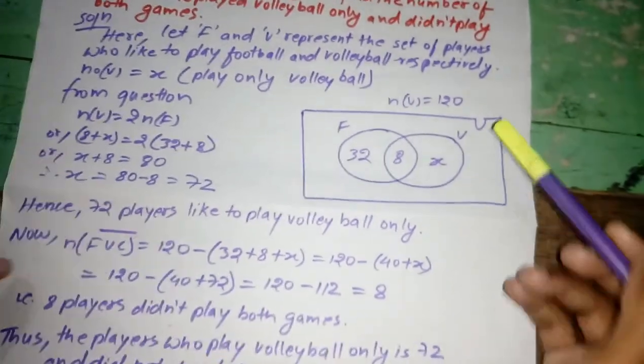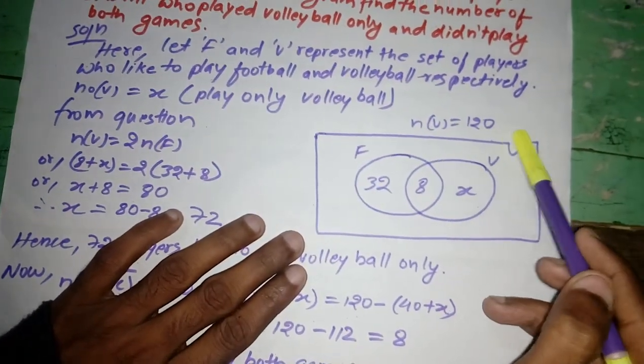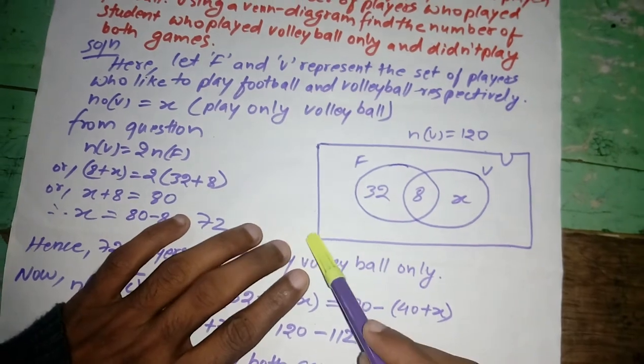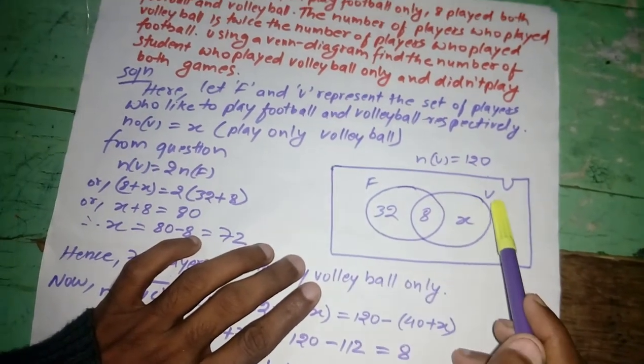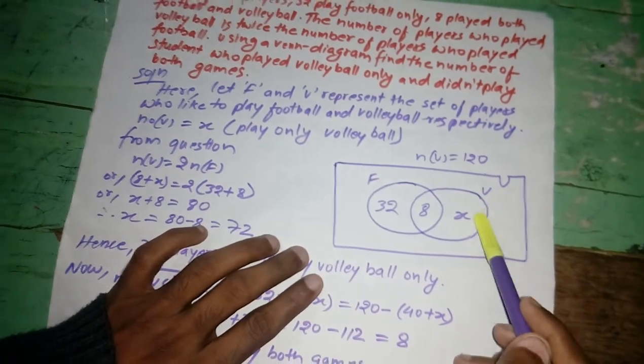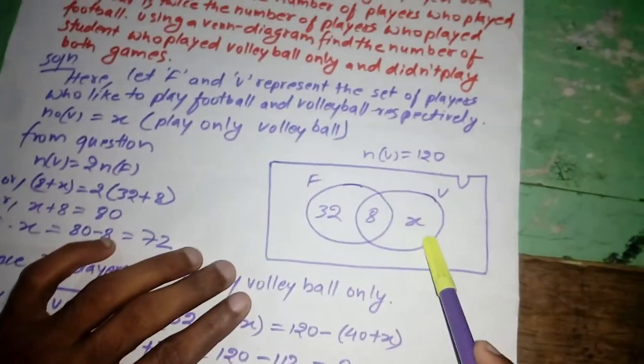Similarly, here given in the Venn diagram, n(U) is equal to 120 and this complete box denotes the complete set. So, first circle denotes F, second circle denotes volleyball, denote X.